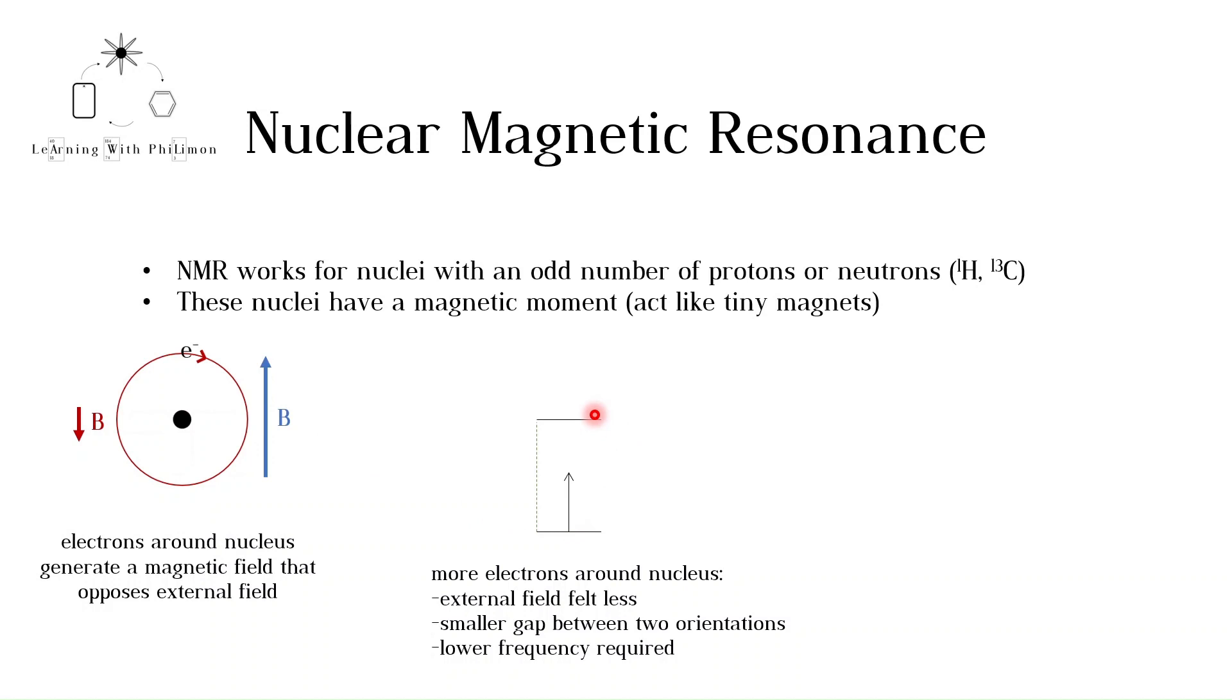Remember that the frequency of a wave is proportional to its energy. The fewer electrons around the nucleus, the larger the gap between the two orientations. This means a higher frequency is required to achieve resonance.